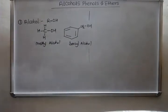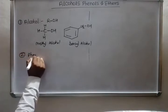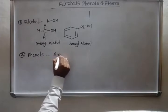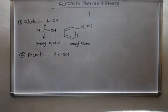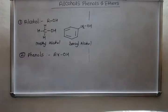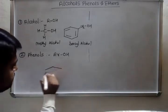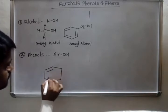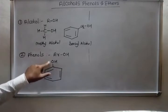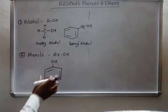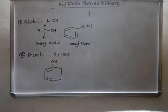Next is phenols. Phenols are represented by ArOH — AR for aromatic ring. The definition of phenols: aromatic hydroxyl compounds in which one or more hydroxyl groups are directly attached to the aromatic nucleus are called phenols. For example, the benzene ring is directly attached to the hydroxyl group. One or more hydroxyl groups directly attached to the aromatic nucleus are known as phenols.